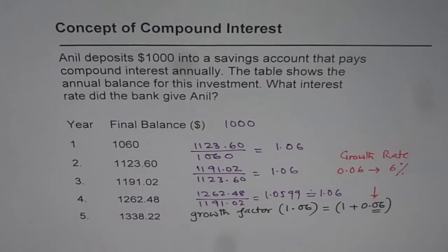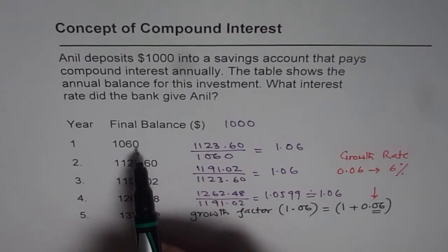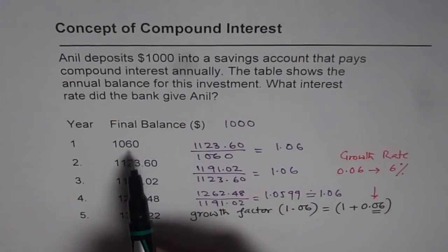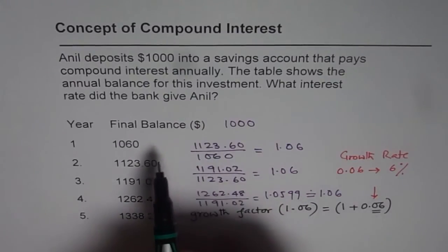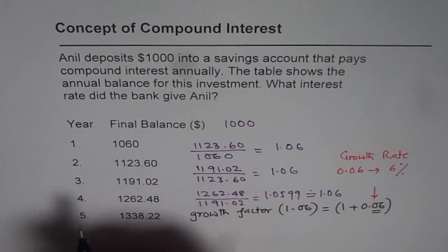There is another way to do it, and that is kind of tricky — in a sense, we are cheating the system. If you see in the first year, the growth rate or the interest compounded annually and simple interest are going to be the same, because initially there is no interest to charge interest on. So in the first year, if we calculate the interest rate, that will give us the compounding interest rate directly.